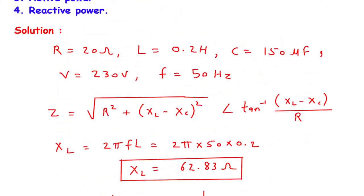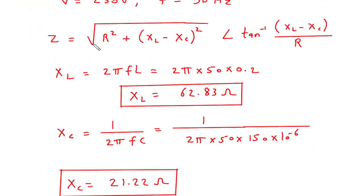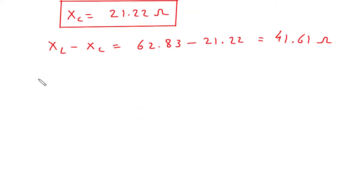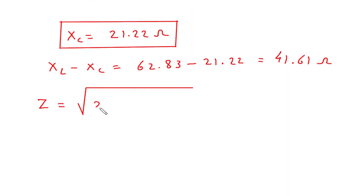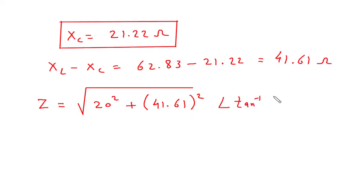Now we have to find impedance Z. Its formula is the square root of R squared plus (XL minus XC) whole squared, at an angle of tan inverse of (XL minus XC) divided by R. Substituting: Z equals the square root of 20 squared plus 41.61 squared, at an angle of tan inverse of 41.61 divided by 20.